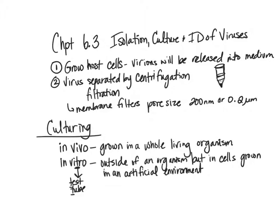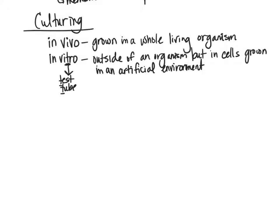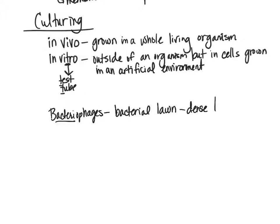We can grow viruses in vivo in a whole living organism, or in vitro. When culturing bacteriophages — viruses that infect bacteria — what we often do is grow what's called a bacterial lawn: a really thick, dense layer of bacteria on an agar plate.